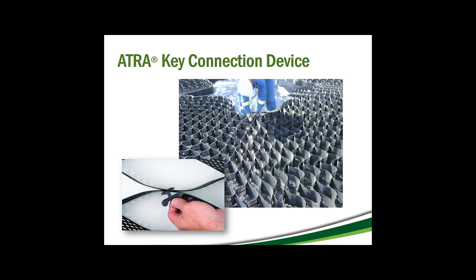The AtraKey is the first component of a completely integrated system, connecting each individual panel of the GeoWeb into a single web that covers the entire slope. It allows for faster installation and lasts the lifetime of the project, ensuring that the slope is protected and that the GeoWeb system won't fail under anticipated loads. The specific engineering values of the AtraKey ensure the system holds up to loading over time, without the corrosion seen in staples or the failure of underperforming cable tie systems.